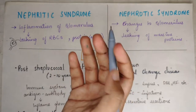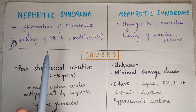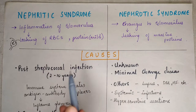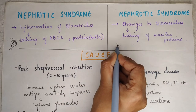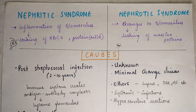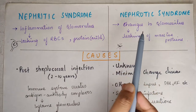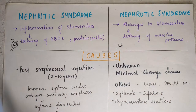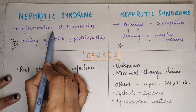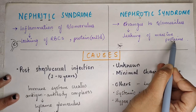When it comes to nephrotic syndrome, there is no inflammation but there are changes in the glomerulus itself — changes seen in the cells of the glomerulus — and that will lead to leaking of massive proteins. To remember: 'nephr-I-tic' has two I's, standing for inflammation, while nephr-O-tic has an O, representing massive protein-O-uria.